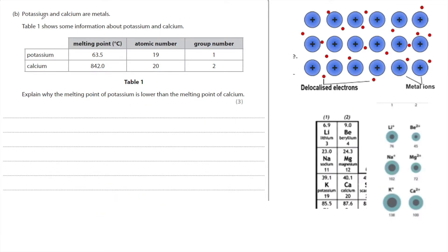The next question is about metallic bonds. Potassium and calcium are metals. The table shows that the melting point of potassium is much lower than calcium, and the atomic number of potassium is one less than calcium. Calcium has one more proton in the nucleus and is in group two. Explain why the melting point of potassium is lower than the melting point of calcium.